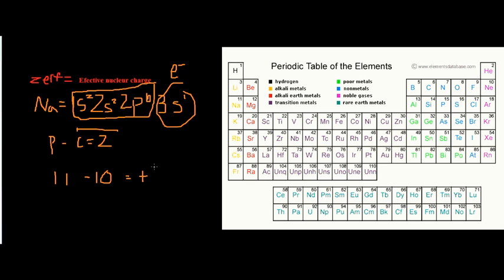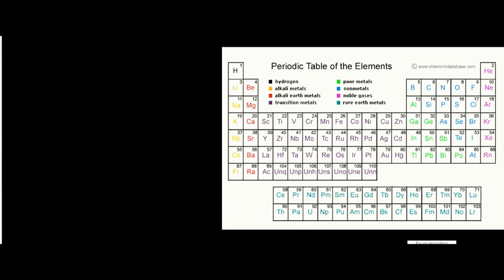Each valence electron in sodium feels an effective nuclear charge of +1, meaning it feels as if there's only one proton attracting it toward the nucleus. For chlorine, if you write the electronic configuration, figure out the core electrons, and subtract from the atomic number, you get a Zeff of +7. So sodium has a Zeff of +1 and chlorine has a Zeff of +7.